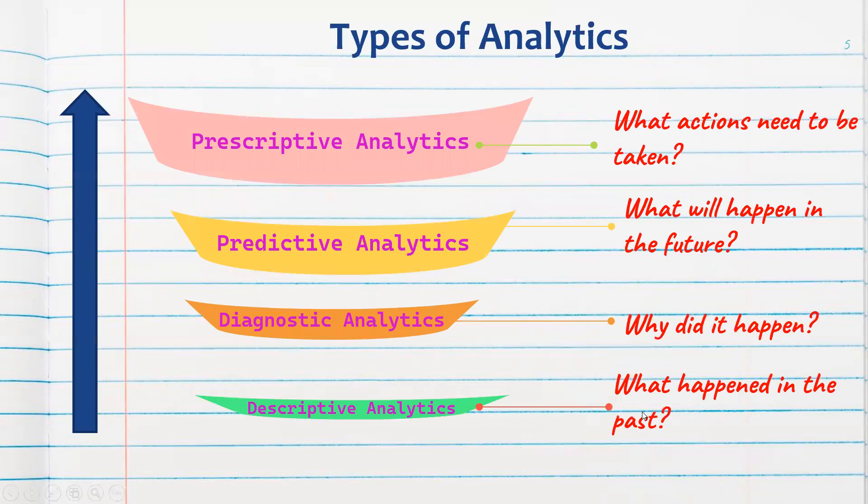So let us quickly try to understand it. First step, we have to start with the descriptive analytics, which is nothing but what happened in the past. Second step is diagnostic analytics. Why did it happen? The third one is predictive analytics. What will happen in the future? The final step is prescriptive analytics. What actions need to be taken?